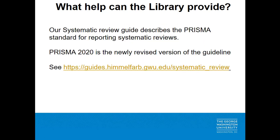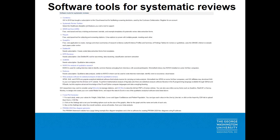The PRISMA guideline was recently updated. The systematic review guide has a link to the updated PRISMA 2020 checklist. The second tab on the guide has a box near the bottom column listing some of the tools available for screening citations, extracting data from included studies, generating a forest plot for a meta-analysis, and creating a PRISMA 2020 flow diagram to summarize the literature search.